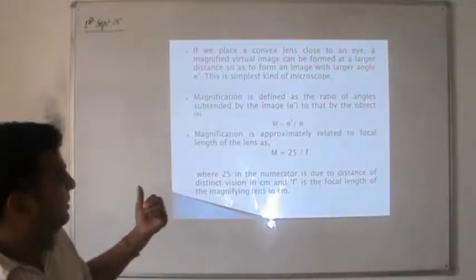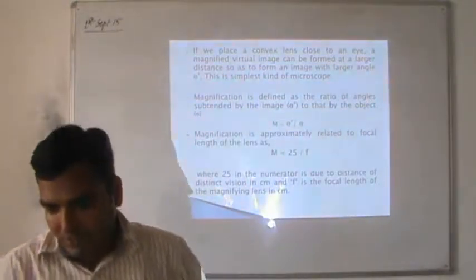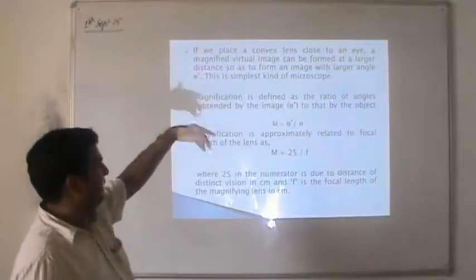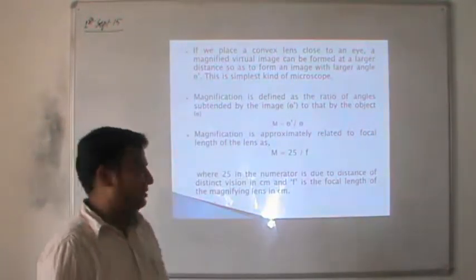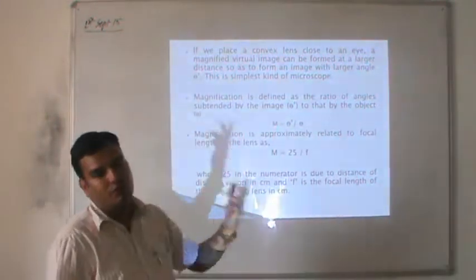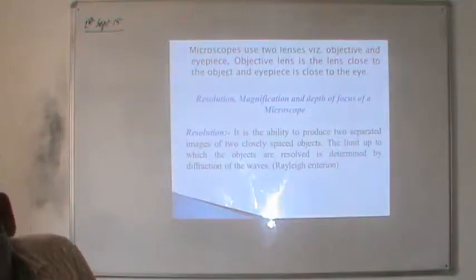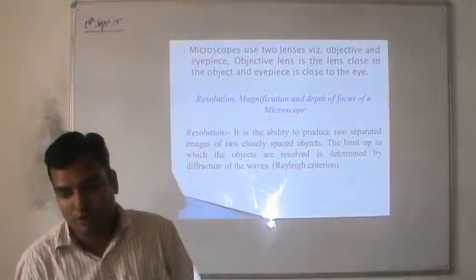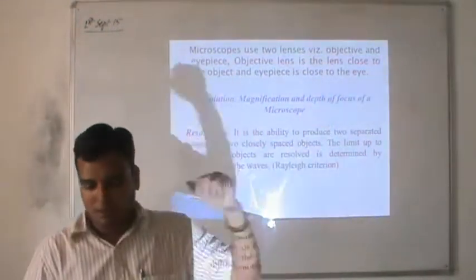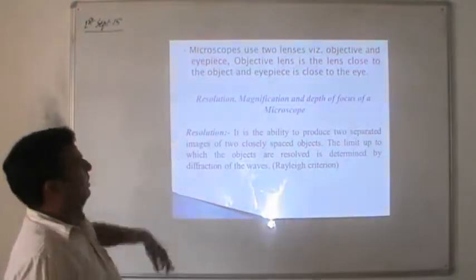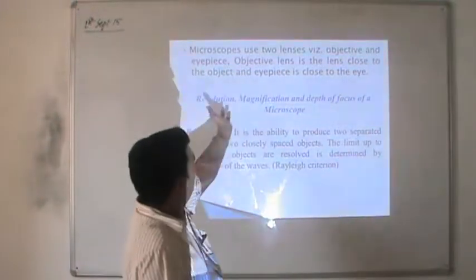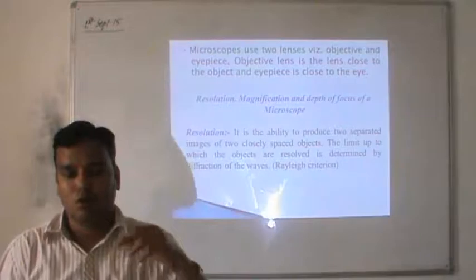The magnification is defined as the ratio of the angle subtended by the image θ' to that by the object θ, so M = θ'/θ. In approximation, visual magnification is related to focal length of the lens as 25/f, where 25 cm is the minimum distance of distinct vision for human eyes and f is the focal length of the magnifying glass in centimeters. In case of a simple microscope or magnifying glass, we use one convex lens. Whereas in case of a compound microscope, we use two lenses - the objective lens close to the object, and the eye lens close to the observer.